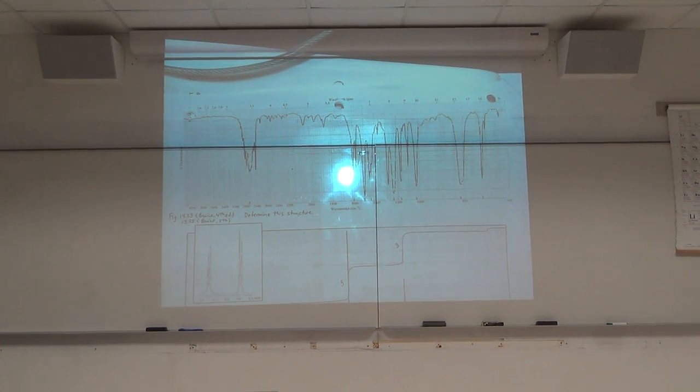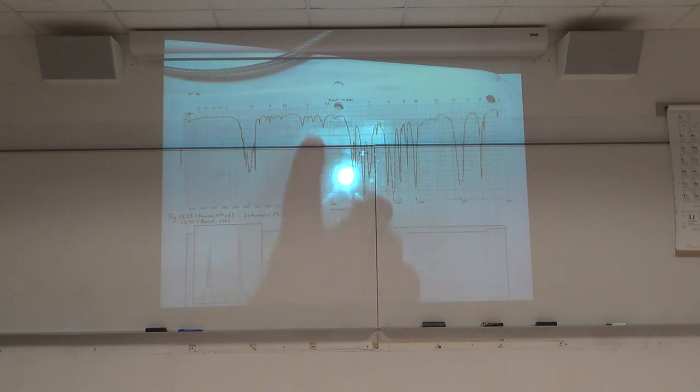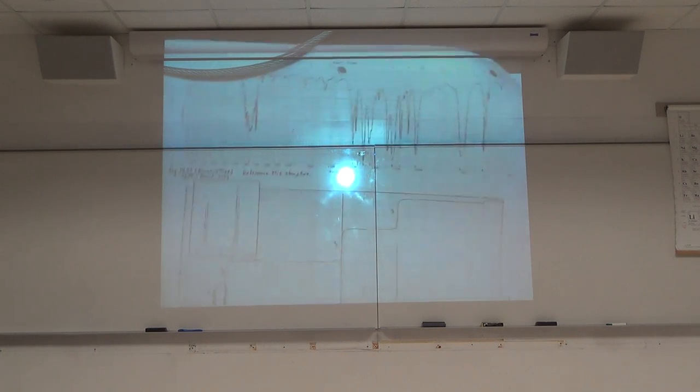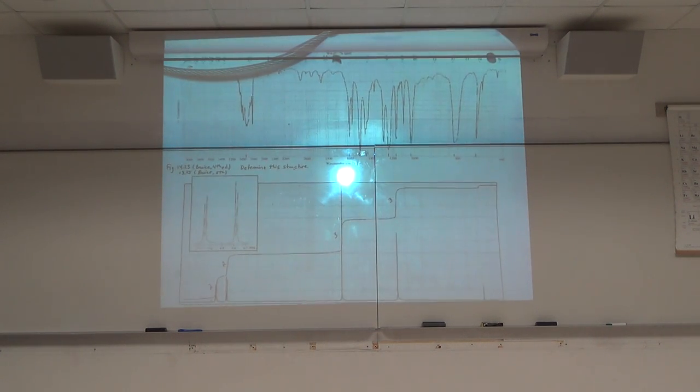Looking at the IR, do we see a carbonyl? No. Do we see an OH? No. OH, NH. I see CH. Looks like an aromatic signature. Pretty much not much there. Are we getting a formula? No, there's no formula here anywhere on the table. Let's look at the proton NMR.